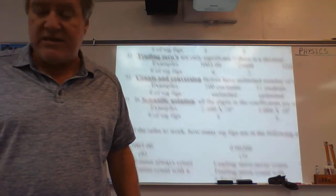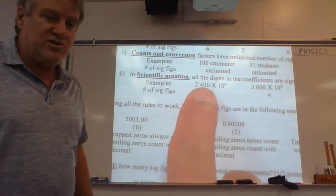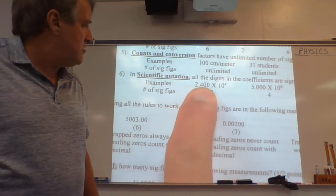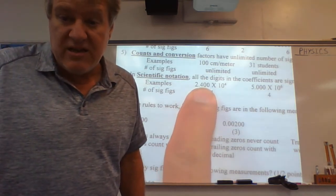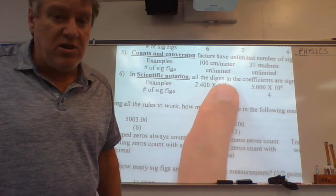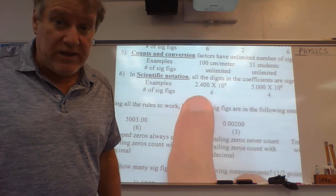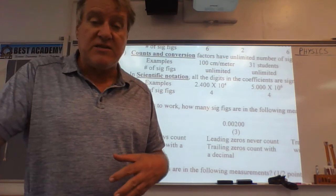Now the last one is pretty simple, and you're going to love this. In scientific notation, all you do is you look at the coefficient, not the exponent. So you notice here there's 2.400. That has four sig figs. Therefore, you want four in the answer. Now we don't even look at the exponent. Don't do anything with that. It's only the coefficient. So however many are there, that's how many sig figs there are.